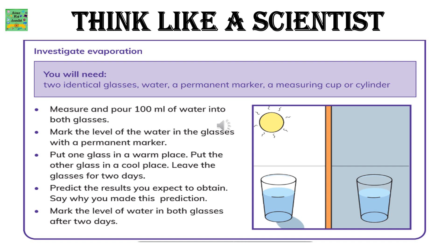Here is an activity. You will need two identical glasses, water, a permanent marker, and a measuring cup or cylinder. Measure and pour 100 ml of water into both glasses. Mark the level of water in each glass with a permanent marker. Put one glass in a warm place and the other in a cooler place. Leave the glasses for 2 days. Predict the results you expect to obtain, and say why you made this prediction. Mark the level of water in both glasses after 2 days.